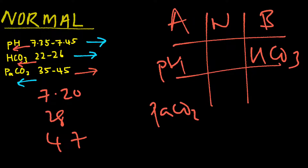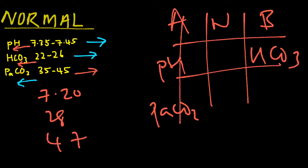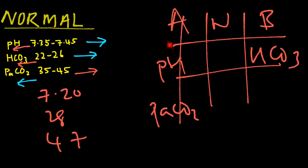The tic-tac-toe will be straight down. The interpretation: this is acidosis since it's under acid for pH. PaCO2 is respiratory, so you have respiratory acidosis. And your HCO3 is under the base column, so it is trying to compensate the acidosis. As such, the interpretation would be partially compensated respiratory acidosis.